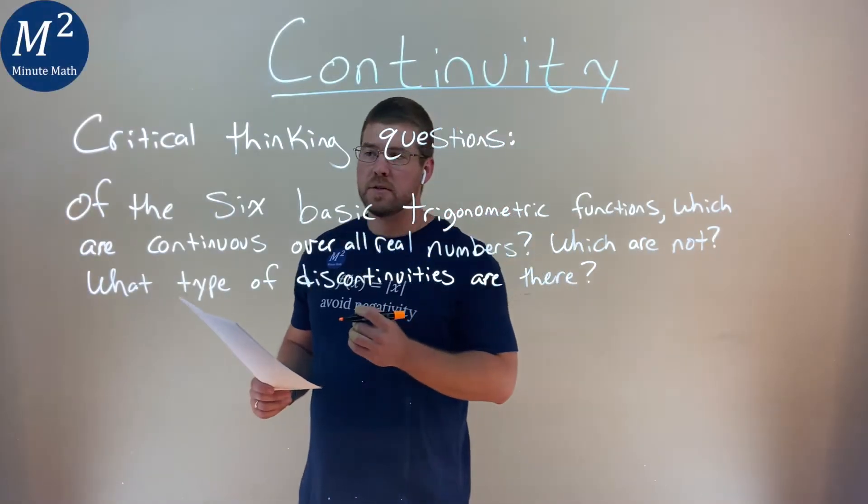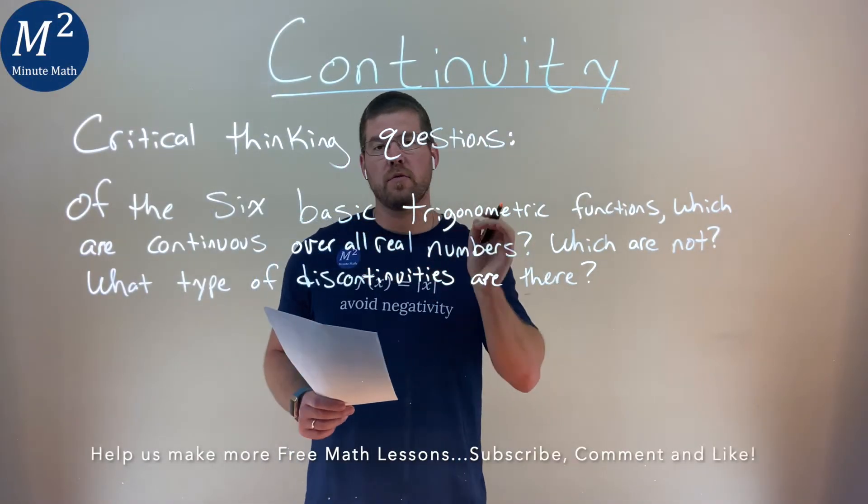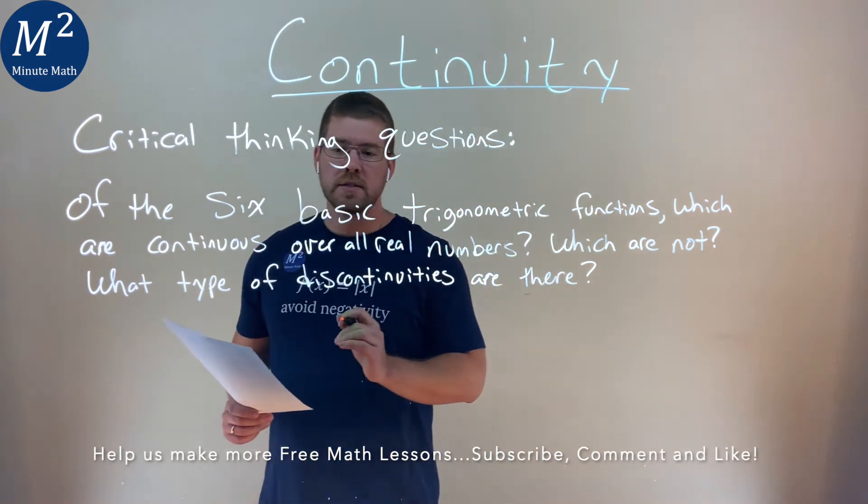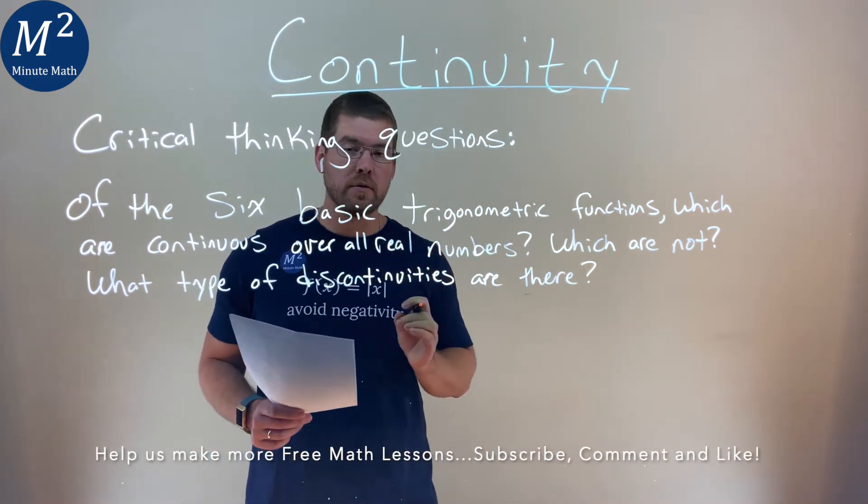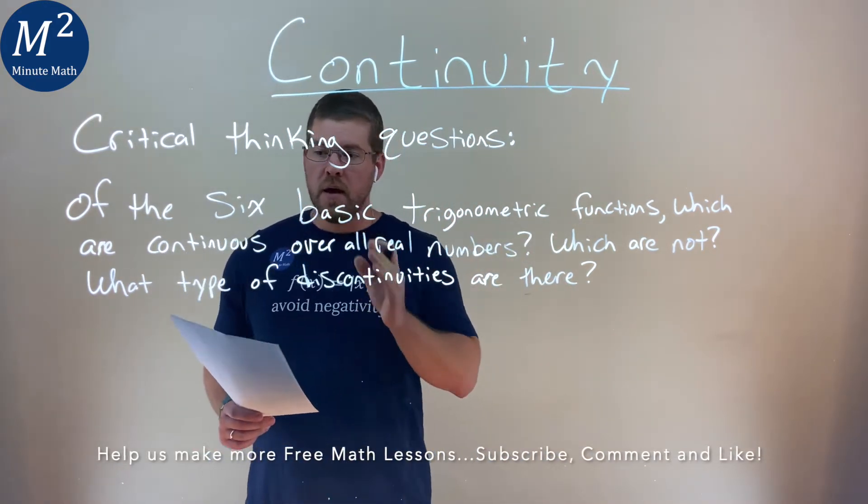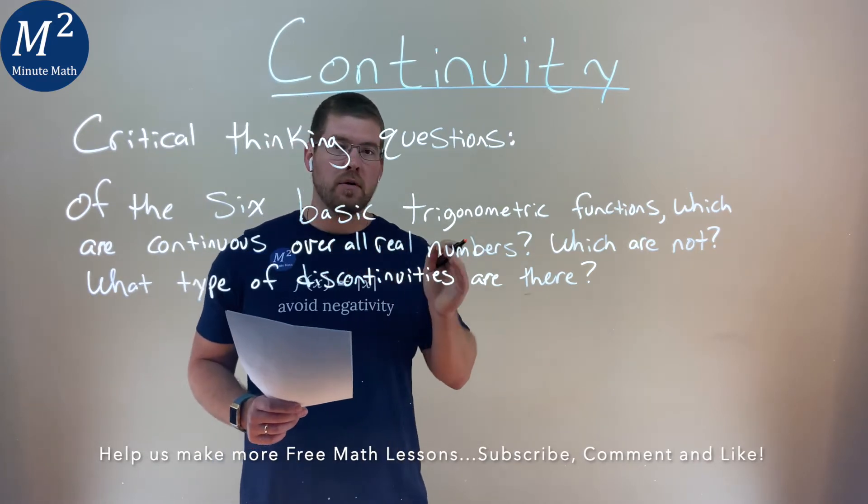We're given this critical thinking question: of the six basic trigonometric functions, which are continuous over all real numbers, which are not, and what type of discontinuities are there?